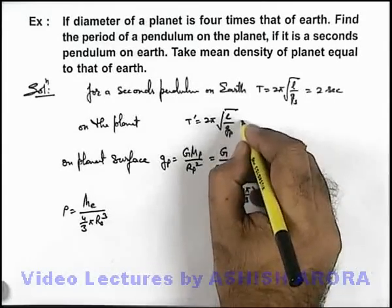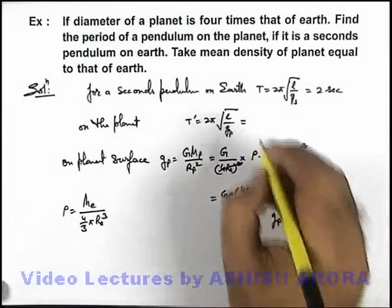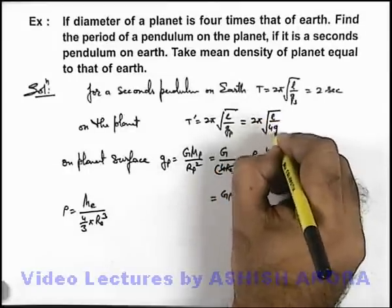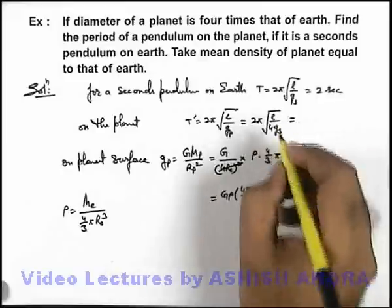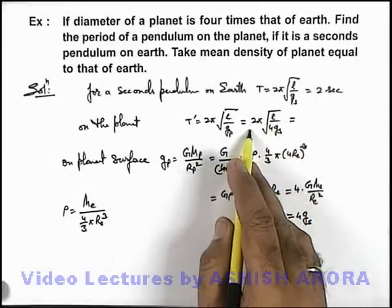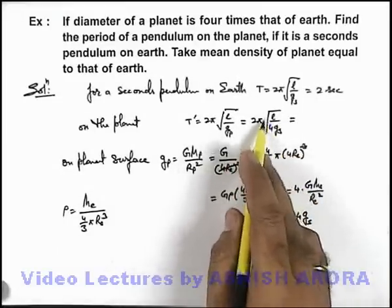So here if we substitute this gₚ as 4g, this will be 2π√(l/4g). And this will be, we can take this 2 common out of the sine of square root.